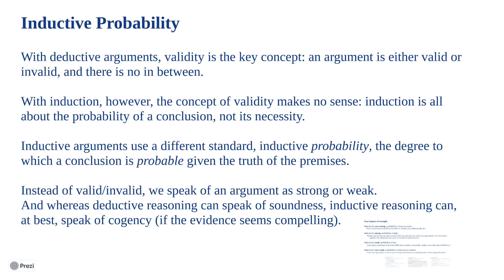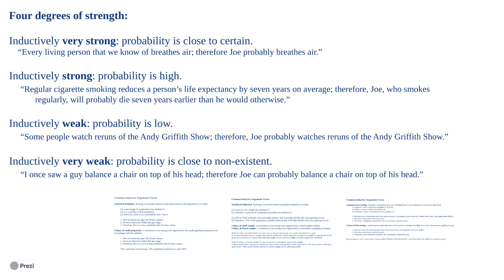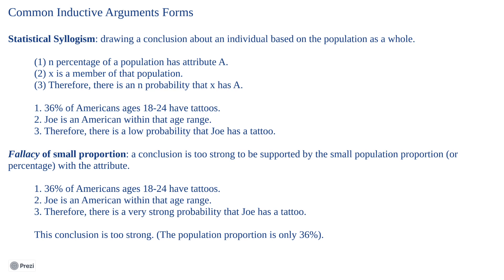In determining cogency, there are four degrees of strength to consider. If something is inductively very strong, its probability is close to certain. If it is not very strong but it is strong, it has a high probability. Something inductively weak has a low probability, and if it is inductively very weak, its probability is close to non-existent. Another way to think of these four degrees would be: highly likely, likely, unlikely, highly unlikely.